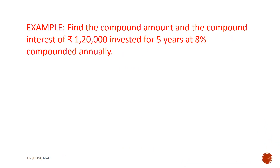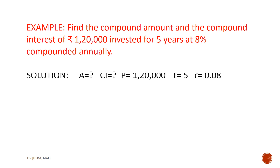In this example, we want to find out the compound amount and compound interest of rupees 1,20,000 invested for 5 years at a rate of interest 8% compounded annually. In this question, principal P is 1,20,000, rate of interest is 8% which implies 0.08, and time is 5.